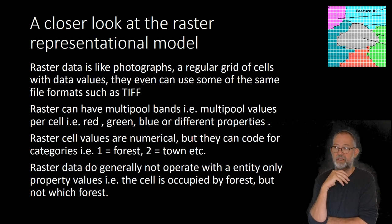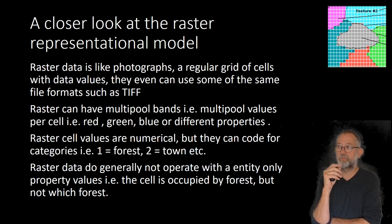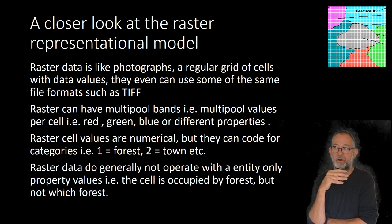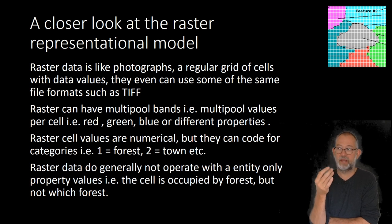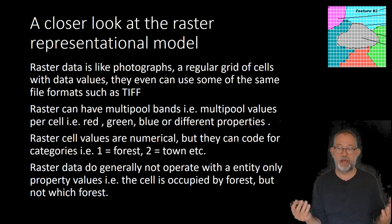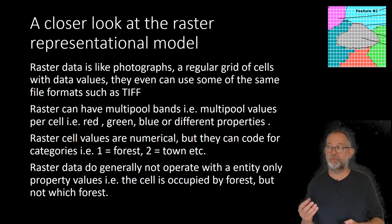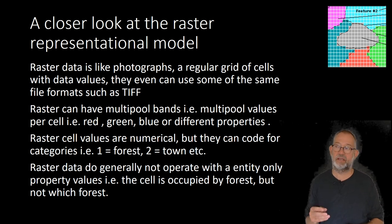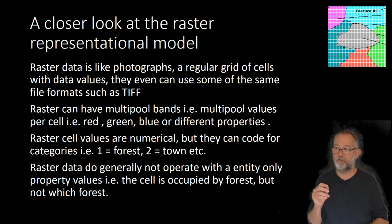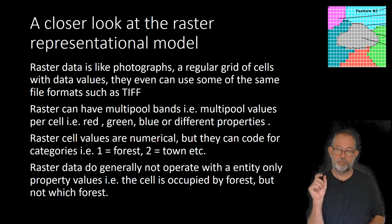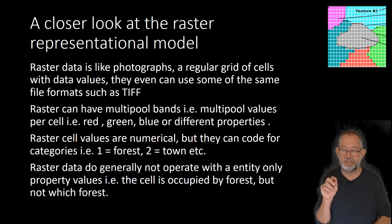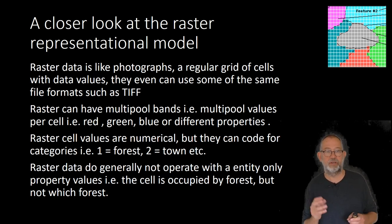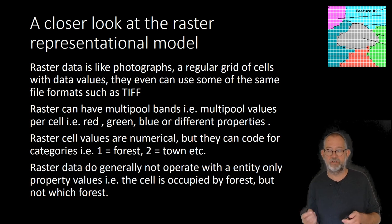Raster can have multiple bands. A typical photograph has three bands: red, green, and blue light. Or if it's a satellite, we can have 30 bands. We can have a different number of bands in the same dataset. Raster cells will always have numerical representations — each cell always has a number. These numbers can then be used to code for different categorical values, so number one meaning a forest, number two meaning a town, and so on.